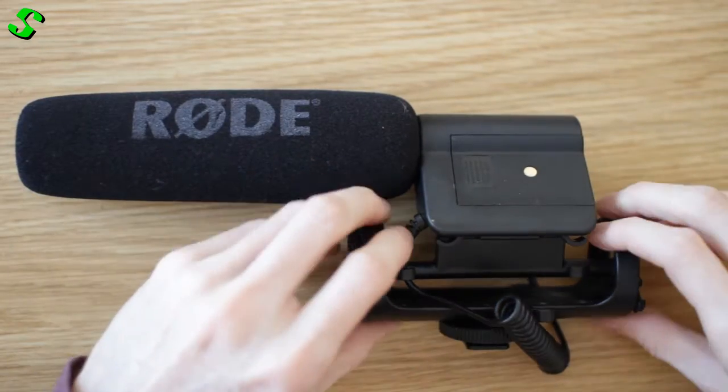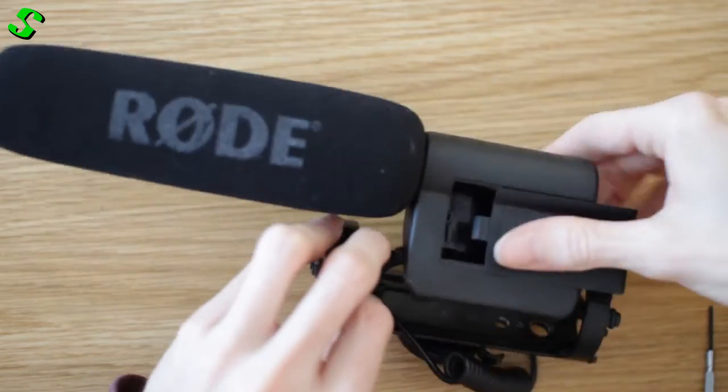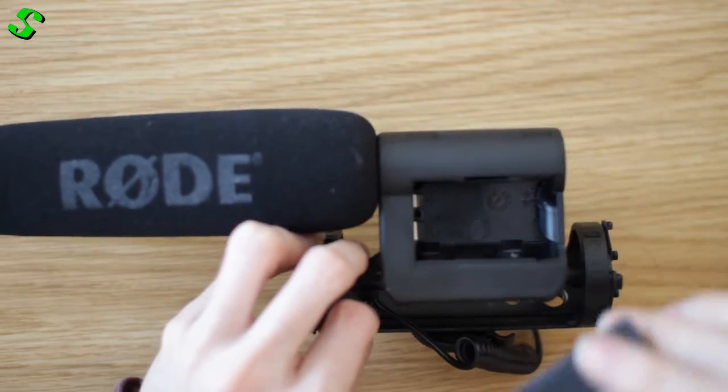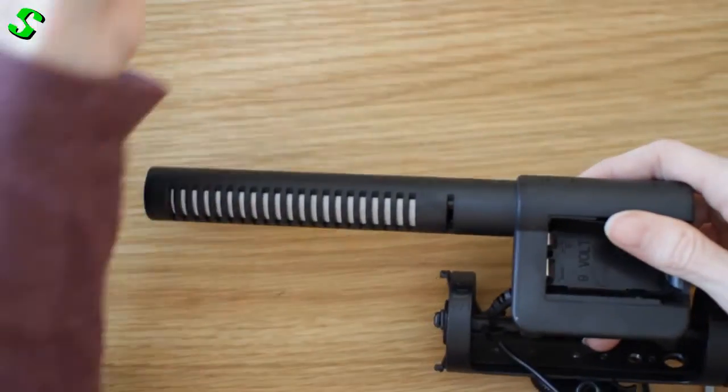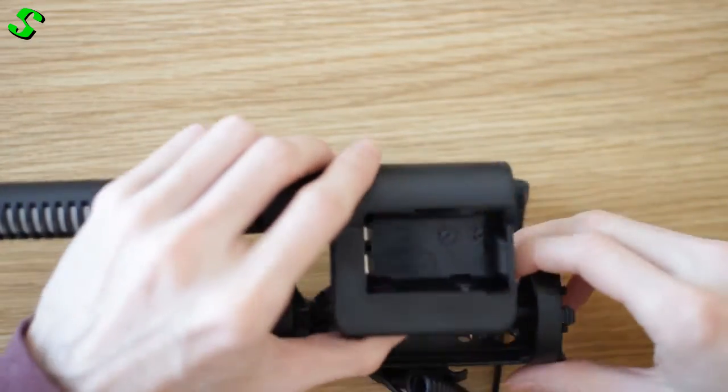So let's get started. First of all, obviously you want to remove the battery and the battery cover, and we're just going to remove the pop shield just to make things easier.